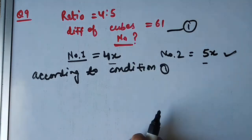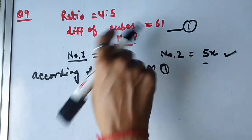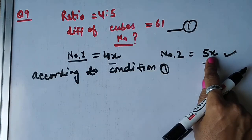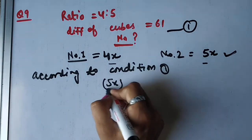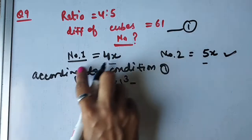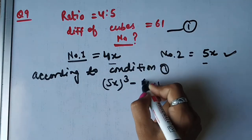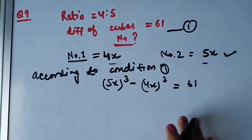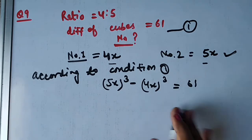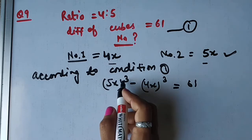Condition 1 ke according: difference of their cubes — inke cube ka difference. Toh 5x ka cube, phir minus, number 1 ka cube, yaani ke 4x ka cube. Aur answer kya aayega — 61. Samajh aaye? Ab iska cube kaise nikalte hain — kisi bhi number ka, usko 3 baar multiply karke.